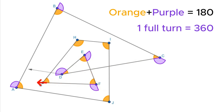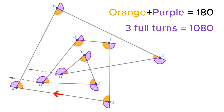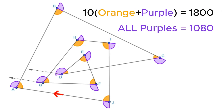As you go through vertex G, you would have completed two full turns of 720 degrees. Finally, as you go through vertex J, you would have completed three full turns of 1080 degrees. We deduce that all the purple angles sum up to 1080 degrees. Remember that the orange and purple angles are complementary. Since there are 10 pairs of them, they total 1,800 degrees. If we subtract away the 1080 degrees representing the purple angles, we are left with 720 degrees for the orange angles.